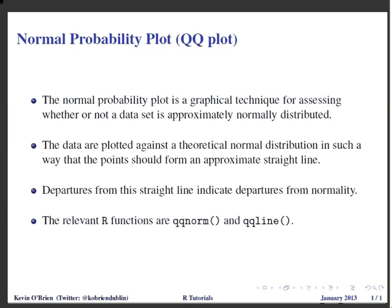Assuming that they were actually normally distributed, departures from this straight line indicate that the assumption was wrong, that in fact the data set is not normally distributed. The relevant R functions we're going to use are qqnorm and qqline.